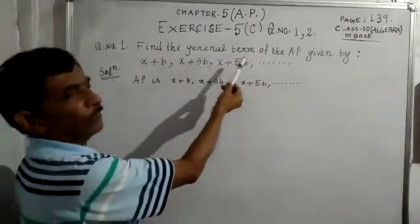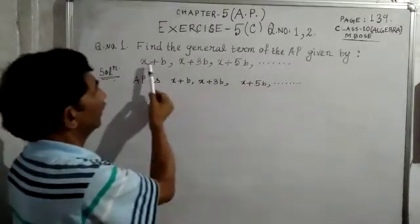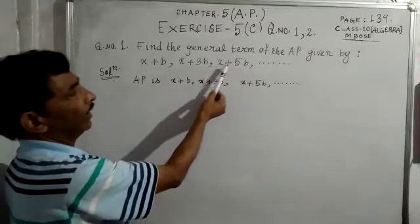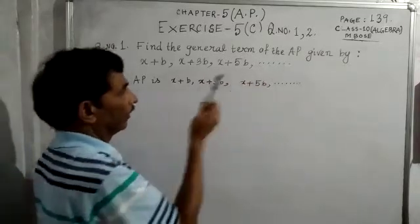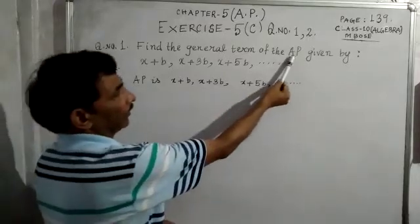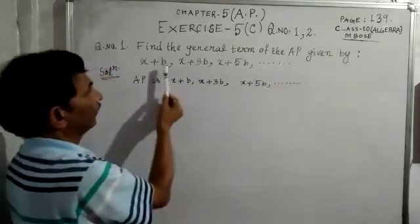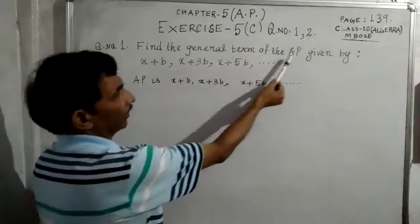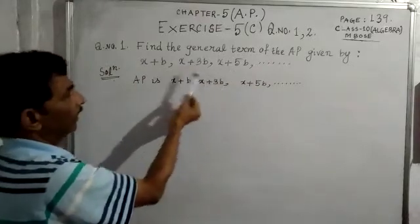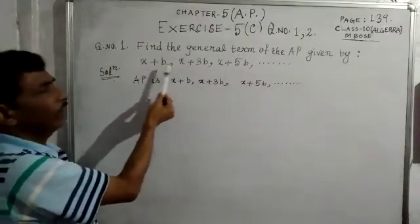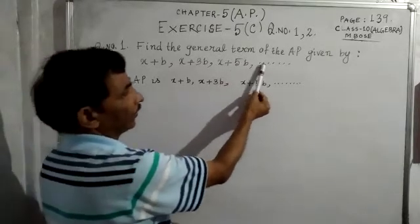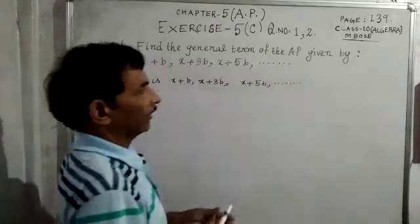Find the general term of the AP given by x plus b, x plus 3b, x plus 5b, dot dot dot. The first three terms of the AP are given. This is an AP where the first term is x plus b, the second term is x plus 3b, and the third term is x plus 5b.